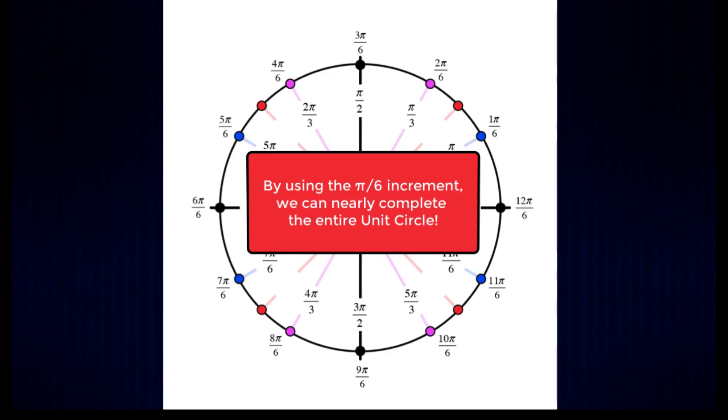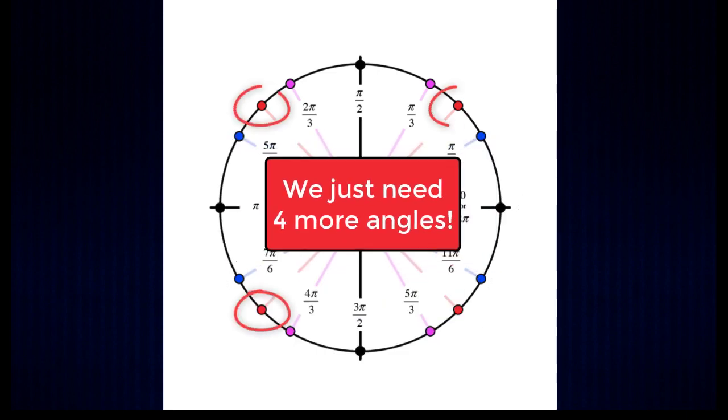So now I hope you see that just by using that one pi over six angle we were almost able to complete the entire unit circle and now we're just missing four angles.